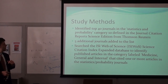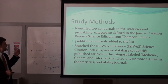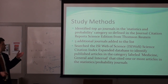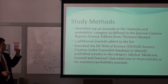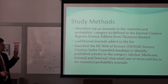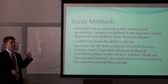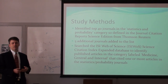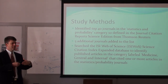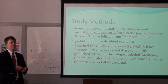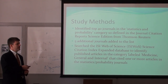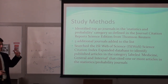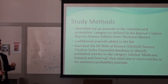The first thing I did was identify the top 40 journals in what's called the statistics and probability category, as defined by the Journal Citation Reports Scientific Edition from Thomson Reuters. One of my collaborators was a librarian — I've never literally collaborated on a research project with a librarian before, and she was very instrumental in helping me think through the framework for actually answering this question.